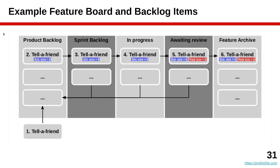Here is a screenshot of how it looks on GitHub, with the product backlog, sprint backlog, in-progress, awaiting review, and feature archive columns. When it's time to implement a feature, it moves from the product backlog to the sprint backlog, then to in-progress when someone picks it up. When finished, it goes to awaiting review, and if the product owner considers it complete it goes to feature archive. If not completed within the sprint time box, it goes back to the product backlog.